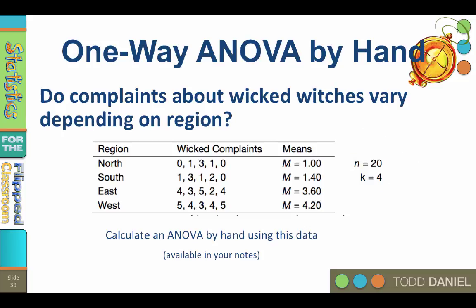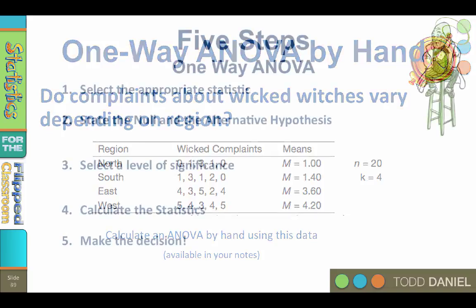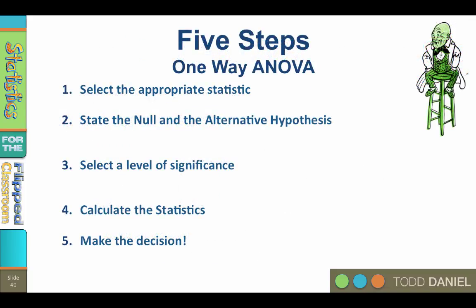Let's walk through the five steps of hypothesis testing for this ANOVA. Step number one, select the appropriate statistic. Well we are comparing four independent groups, so we will use the one-way ANOVA.